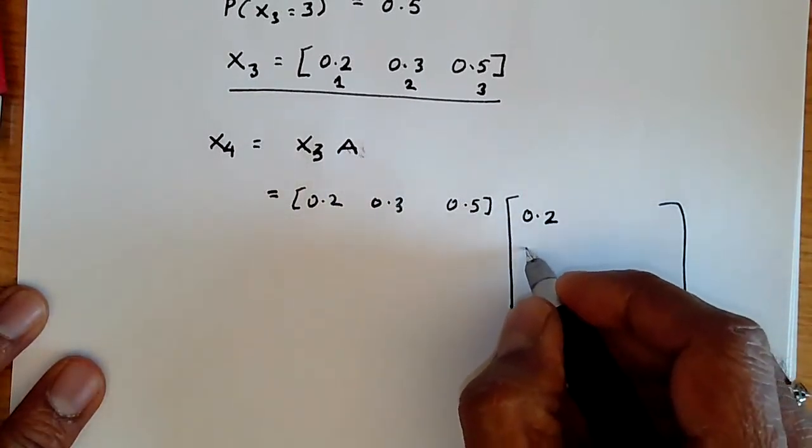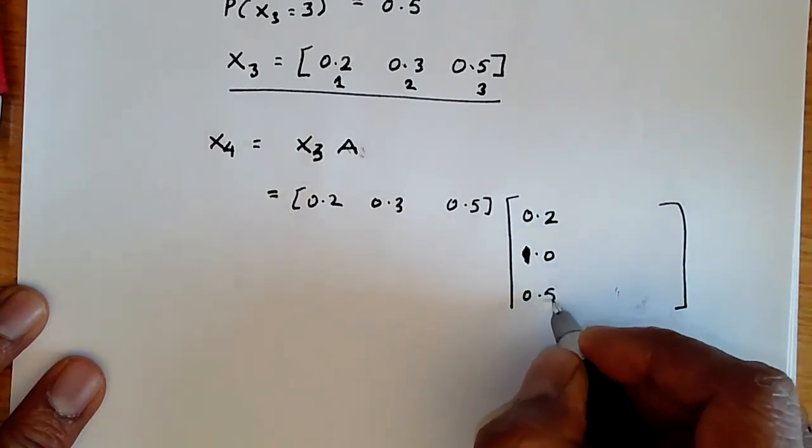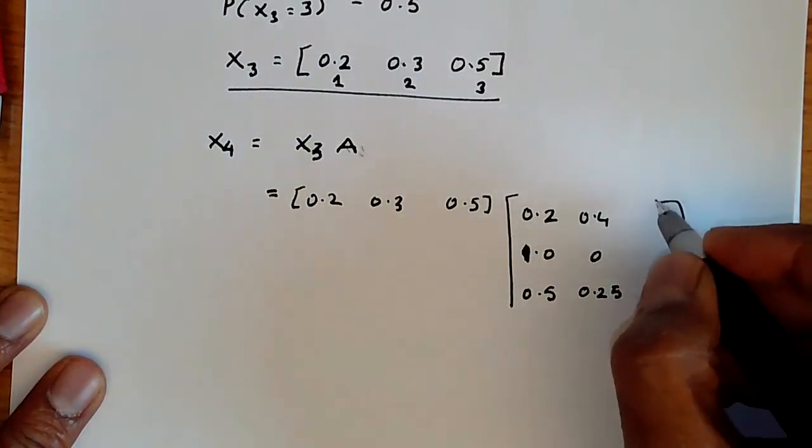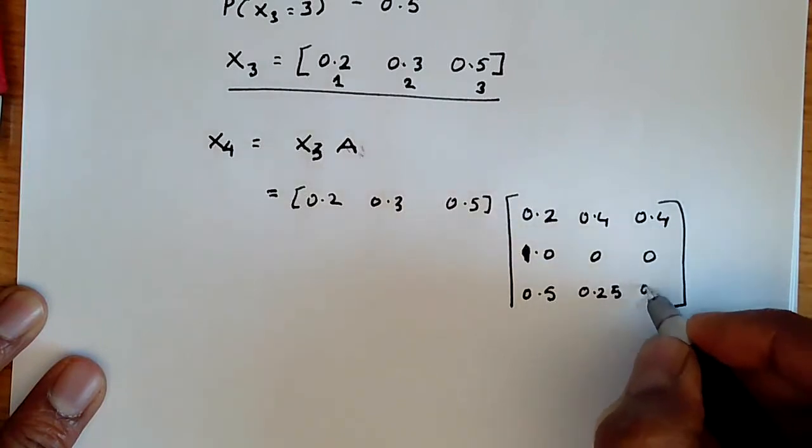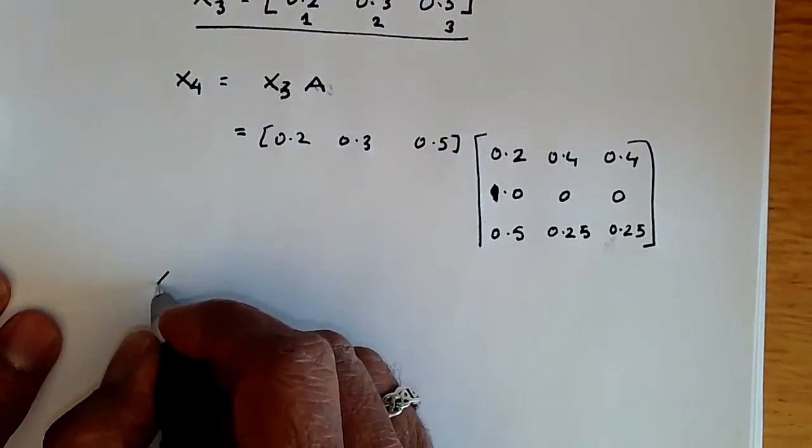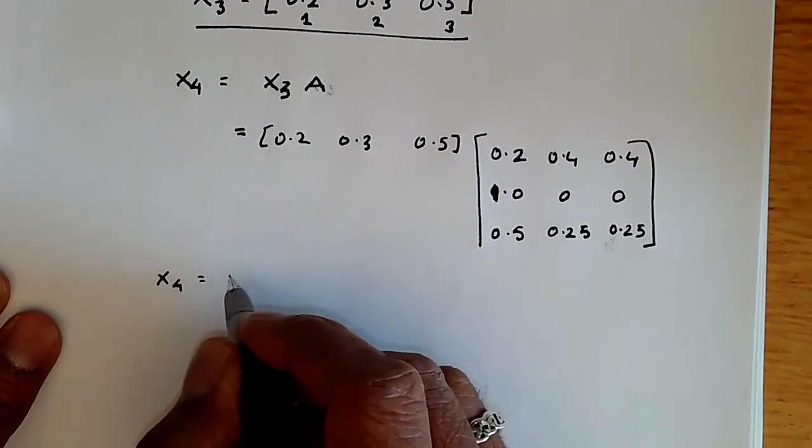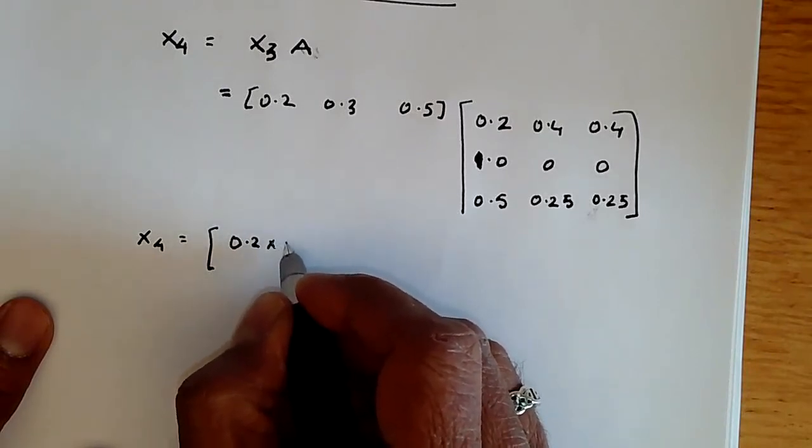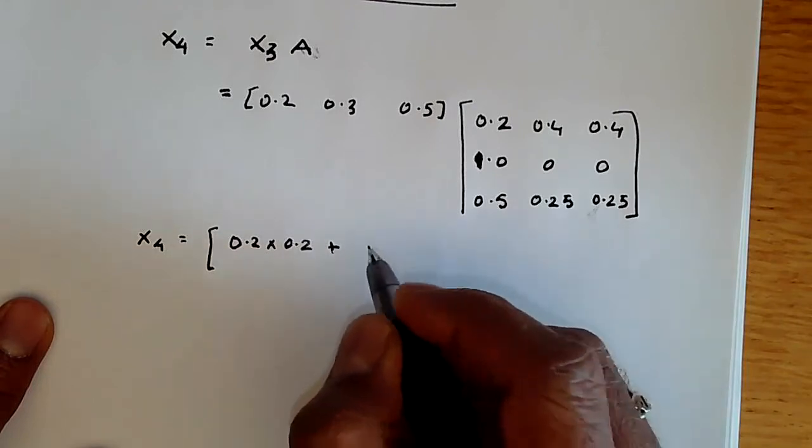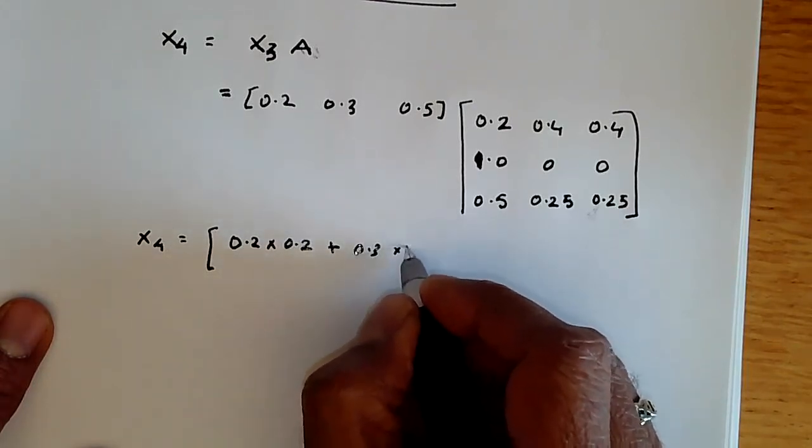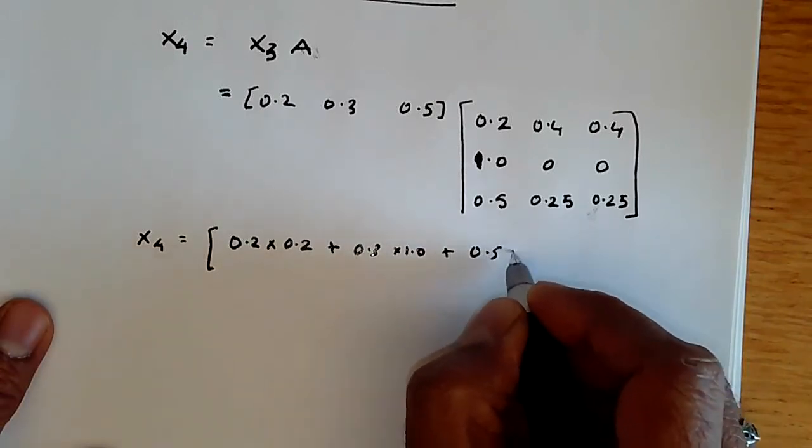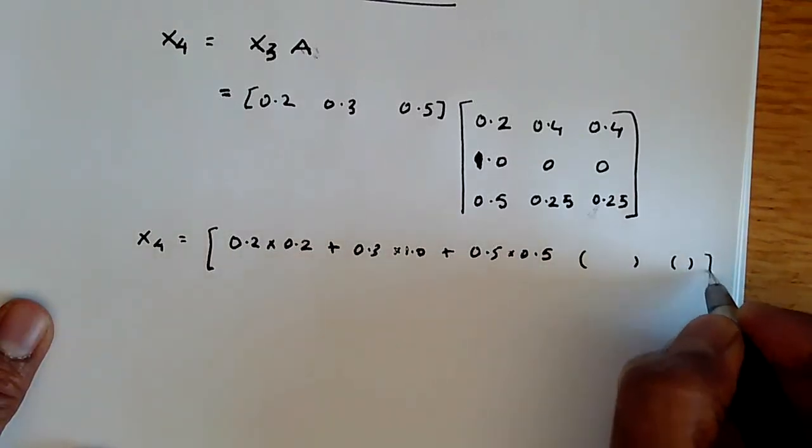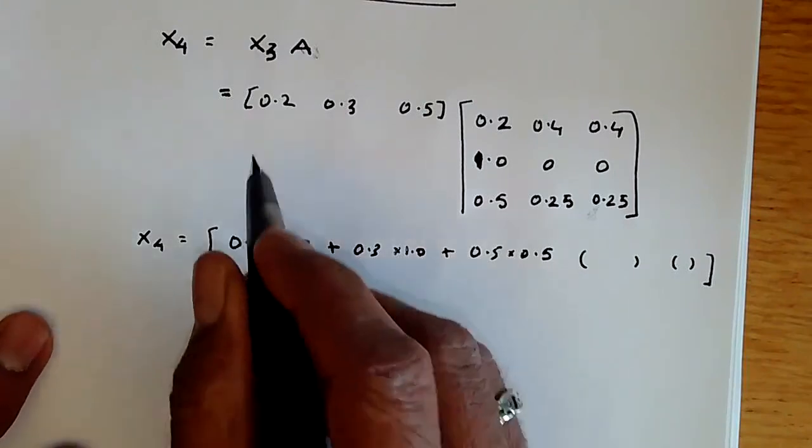0.5. So we can say that X4 is going to be given by, I'll just write out the first part of it: it is 0.2 times 0.2 plus 0.3 times 1.0 plus 0.5 times 0.5. That's the first value. And then the second and the third values will likewise be the products over here.